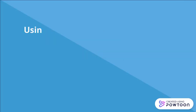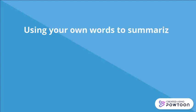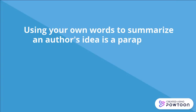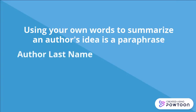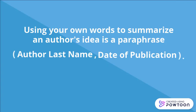If you summarize an author's idea using your own words, this is a paraphrase. You don't use quotation marks, but you still need an in-text citation. Following your paraphrase, include the author's last name, comma, and the date of publication in parentheses, followed by a period. Remember to place your period after your in-text citation. You don't need to include page numbers.